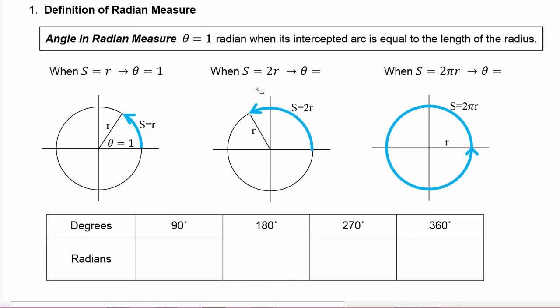We also saw when the arc length was twice the radius, so if it came along here one length of the radius and then came along here a second length of the radius, then this angle inside here is θ equals two.